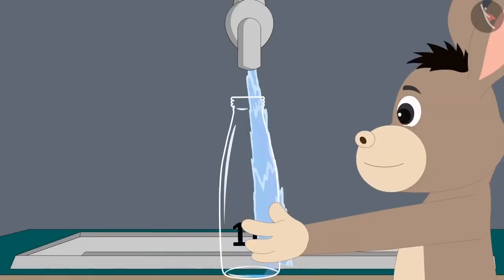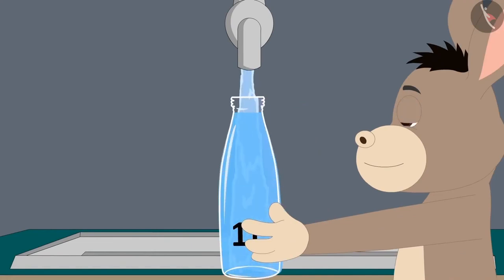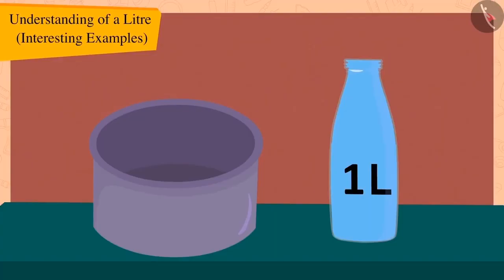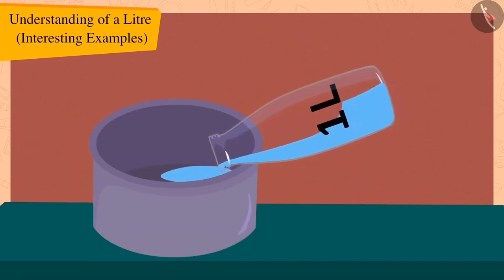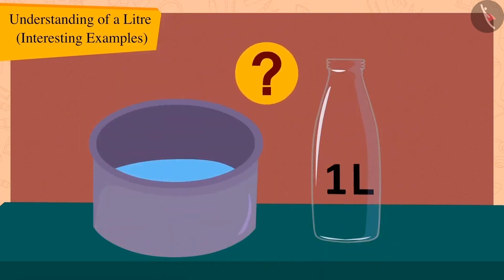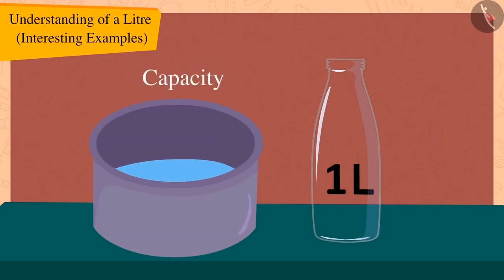Now Bholla once again filled that one litre bottle with water and this time he tried to fill his pot with it. But the one litre bottle was empty and the pot also remained quite empty. Children, what does this mean? This means that Bholla's pot has a capacity of more than one litre.